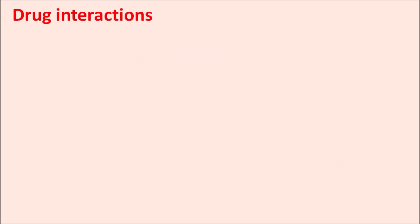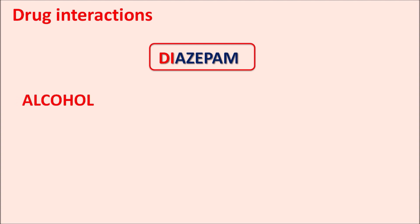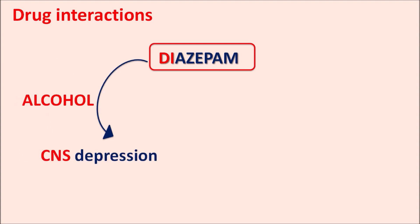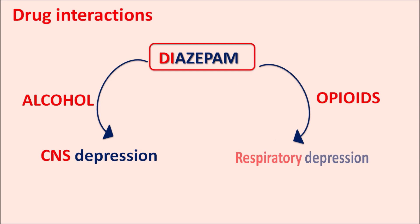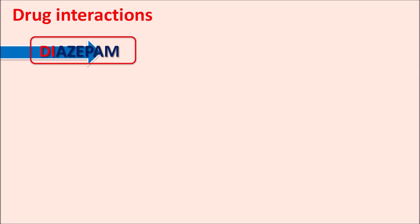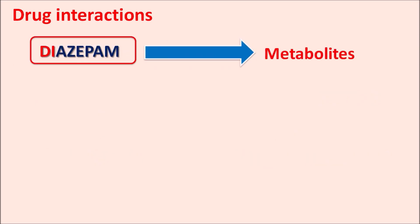Regarding drug interactions: diazepam can interact with alcohol, producing severe CNS depression. Along with opioids — which are also CNS depressants and produce respiratory depression — diazepam can produce severe respiratory depression. Diazepam is metabolized into active metabolites such as desmethyldiazepam, nordiazepam, oxazepam, and temazepam, as well as inactive metabolites.